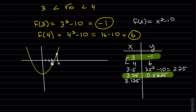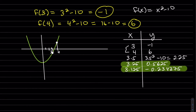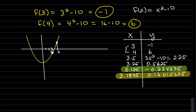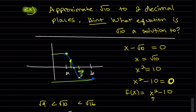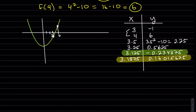We plug it in — just square it and subtract 10. We get a negative. So we use the previous answer and this one; the outputs are positive and negative. We take the average of those two x values, add them up and divide by 2, square it, subtract 10. We keep track of which pair has opposite signs and take the average again. We want it to two decimal places, which means we continue until those two decimal places stop changing. We're still a bit far apart, so we have to keep going.